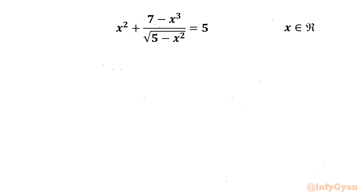Welcome back to InfiGyawn friends. In this video we are going to take up another very interesting question from radical equations: x² + 7 − x³ over √(5 − x²) = 5, and we are going to find out all real solutions. So let's get started.